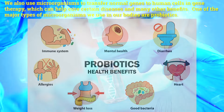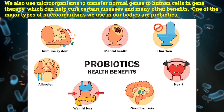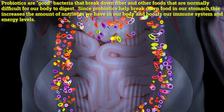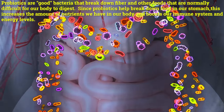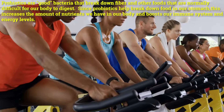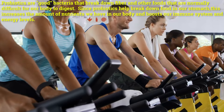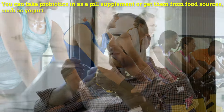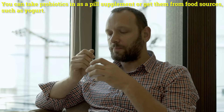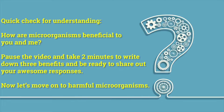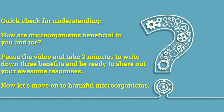One of the major types of microorganisms we use in our bodies are probiotics. Probiotics are good bacteria that break down fiber and other foods that are normally difficult for our body to digest. Since probiotics help break down food in our stomach, this increases the amount of nutrients we have in our body and boosts our immune system and energy levels. You can take probiotics as a pill supplement or get them from food sources such as yogurt. Quick check for understanding: how are microorganisms beneficial to you and me? Pause the video and take two minutes to write down three benefits.